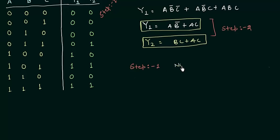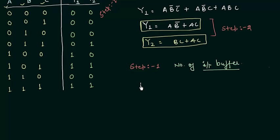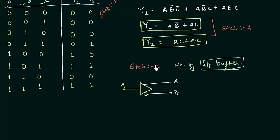In step 3 we will find out the number of input buffers. An input buffer is nothing but a combination of NOT gates that gives you the variable in normal form as well as the complemented form. The variables here are A, B, and C, and by using the input buffer we have A, A complement, B, B complement, C, and C complement. It is represented by a symbol where there is one input and two outputs — the first output gives you the variable in normal form, and the second output from the bubble gives you the complemented form.